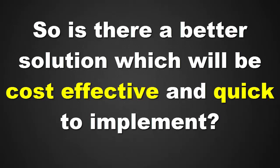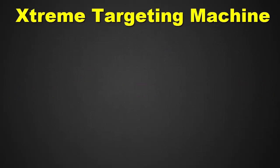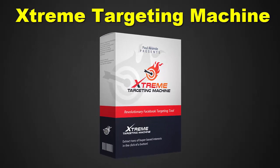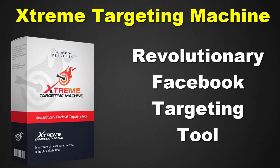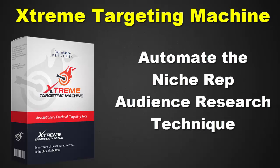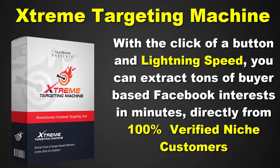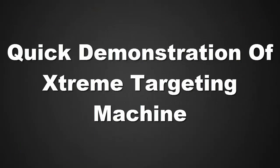So, is there a better solution which will be cost-effective and quick to implement? Introducing Extreme Targeting Machine. Extreme Targeting Machine is a revolutionary Facebook targeting tool designed specifically to automate the niche rep audience research technique. With a click of a button and lightning speed, you can extract tons of buyer-based Facebook interests in minutes directly from 100% verified niche customers. Let's see the tool in action.